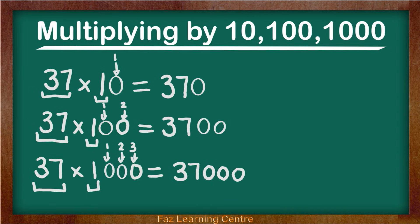So let's look at the pattern. As you can see, the number is getting big. When we are timesing by 10 we are adding 1 0. When we are timesing by 100 we are adding 2 0's. When we are timesing by 1000 we are adding 3 0's.